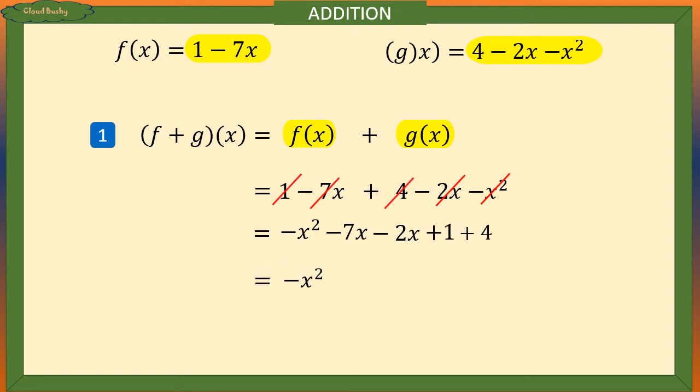So we have minus x squared minus 7x minus 2x is all equals to minus 9x plus 1 plus 4 is 5 and that gives us our answer.